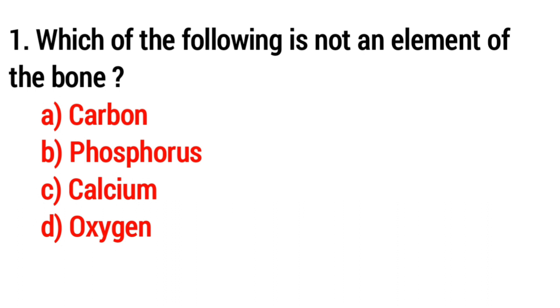Question 1: Which of the following is not an element of the bone? Option A carbon, Option B phosphorus, Option C calcium, Option D oxygen. The correct answer is option A, carbon.